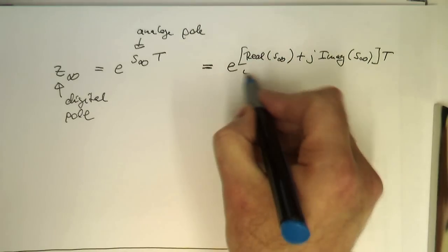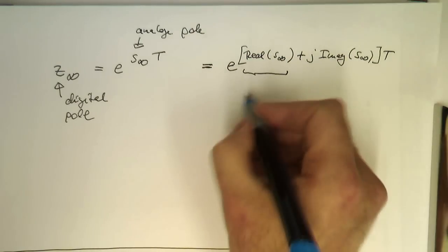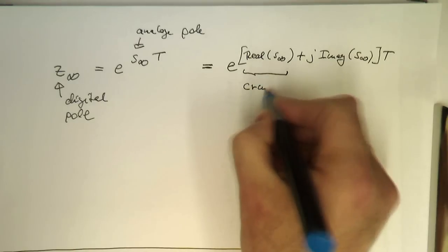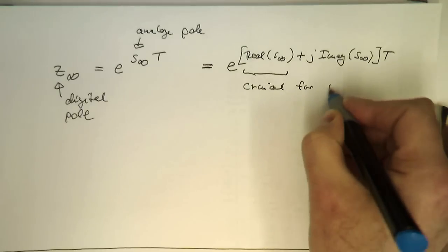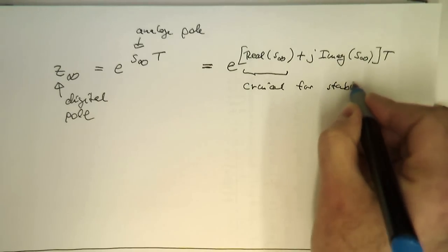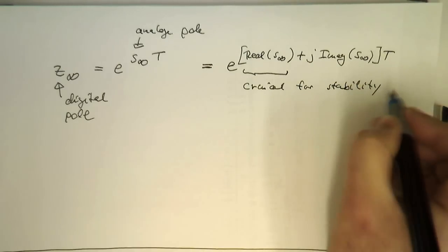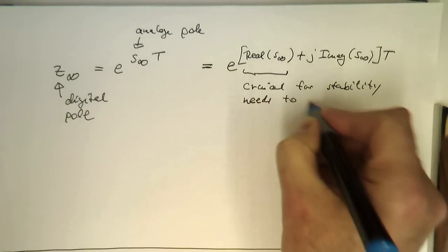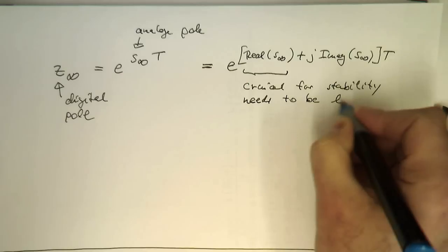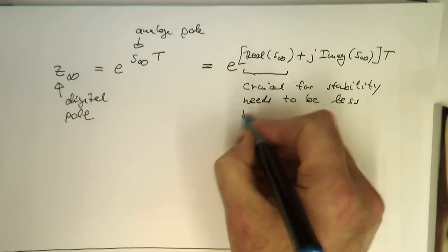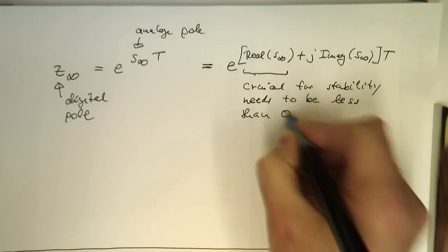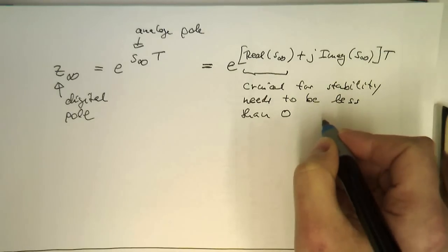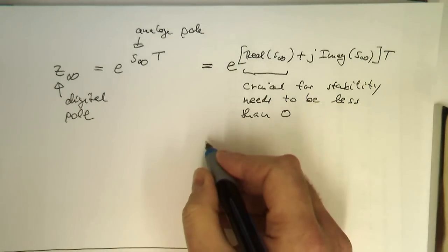The real part here is the one which is crucial for stability. This needs to be less than zero to have stability. This means in terms of the exponential.